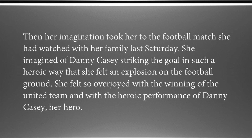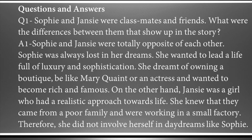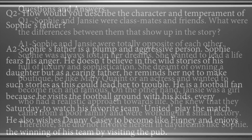Question 1: Sophie and Jansi were classmates and friends. What were the differences between them that showed up in the story? Answer: Sophie and Jansi were totally opposite to each other. Sophie was always lost in her dreams, wanting a life full of luxury and sophistication — dreaming of owning a boutique, being like Mary Quant, or becoming an actress and getting rich and famous. Jansi, on the other hand, had a realistic approach towards life. She knew they came from a poor family and were working in a small factory, so she did not involve herself in impossible dreams like Sophie.